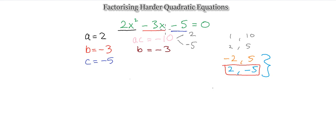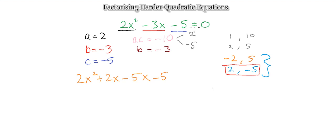Breaking our minus 3x into these two terms, let's rewrite the equation. That gives us 2x squared plus 2x minus 5x minus 5. The equals zero is there if we're solving the quadratic equation, but we're just factorizing now, so let's set that aside to avoid confusion.